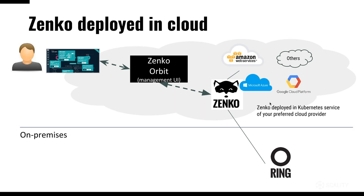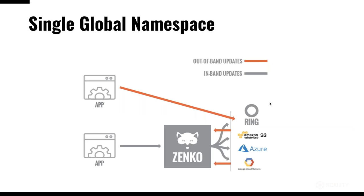You can also deploy a Zenko instance in a Kubernetes service on any public cloud that supports Kubernetes, deployed in your account, with the Zenko Orbit interface managing and controlling the platform. If you wish, you can open a tunnel to a Scality Ring on site and push data from a system deployed in the cloud. That's the IoT use case — your data comes into a public cloud and you push it to a private cloud based on certain criteria. Both public and private deployment models are supported today.